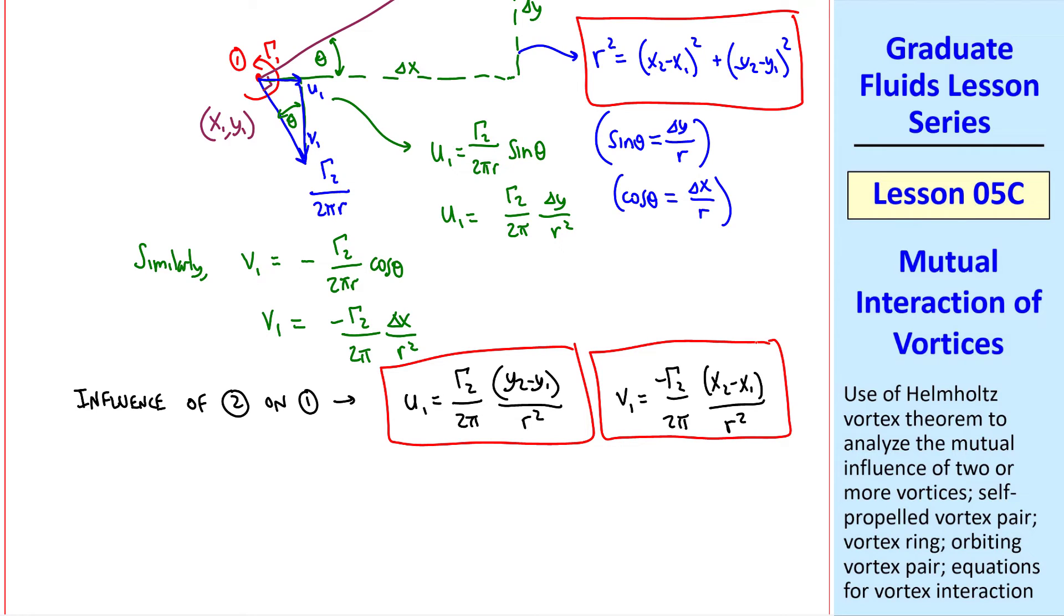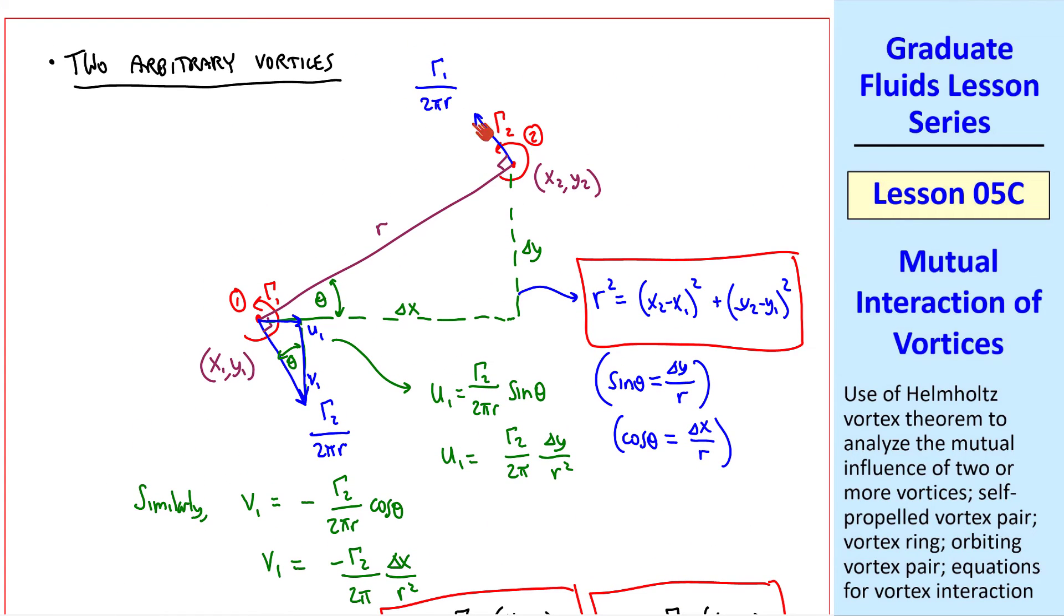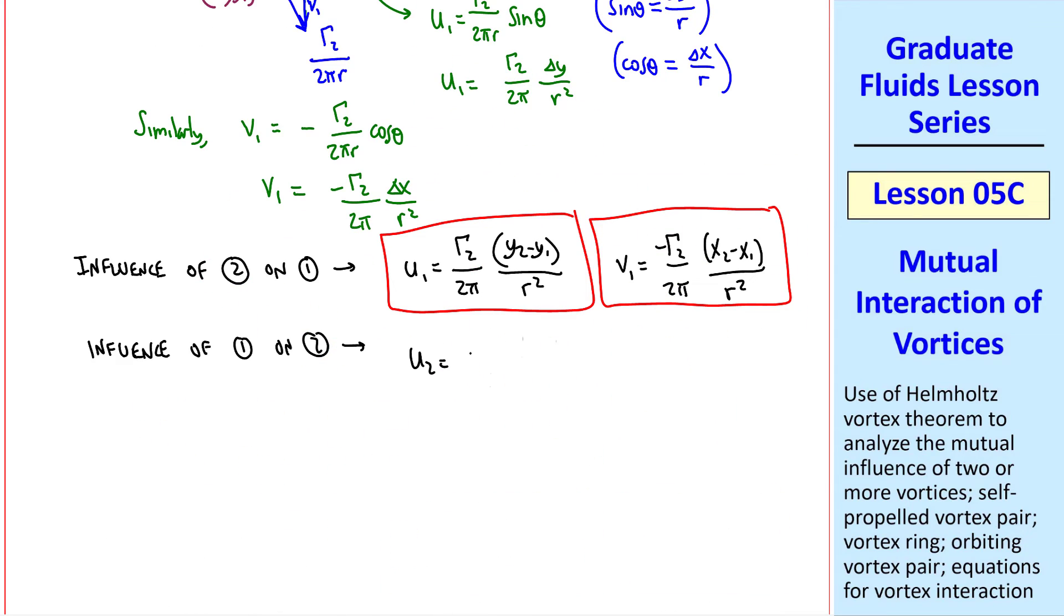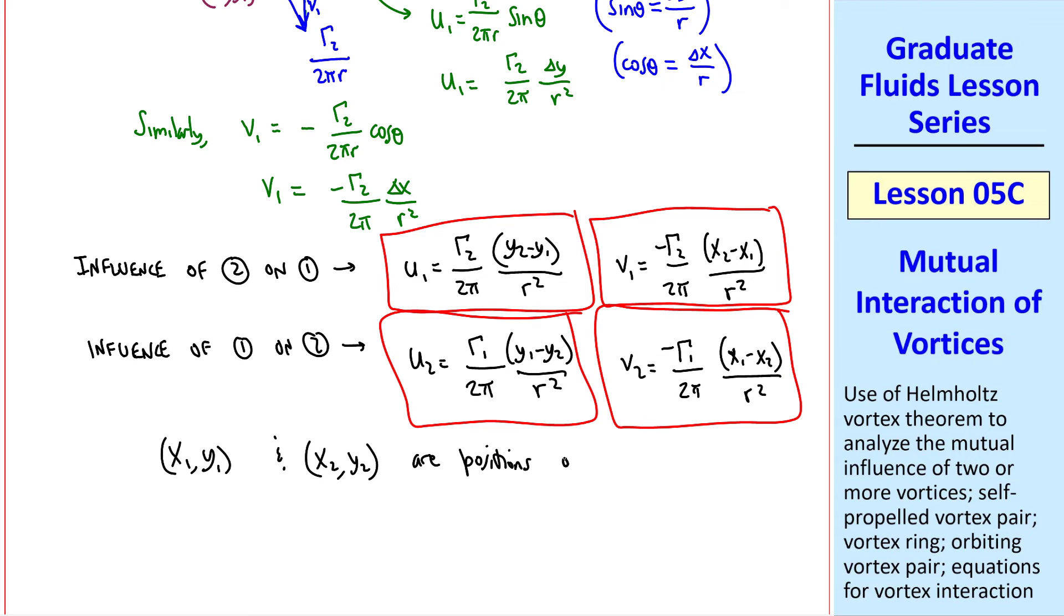And remember that r squared is given by our original coordinates x_1, y_1, and x_2, y_2. Similarly, v_1 is negative gamma_2 over 2 pi x_2 minus x_1 over r squared. Thus we can predict the induced velocity on vortex 1. Similarly, the influence of vortex 1 on vortex 2, if you draw a similar triangle up here and do the trig, you get u_2 equal gamma_1 over 2 pi y_1 minus y_2, notice the change of sign here, over r squared. And v_2 is negative gamma_1 over 2 pi x_1 minus x_2, again noticing the sign change, divided by r squared. I note that x_1, y_1, and x_2, y_2 are the positions of vortex 1 and vortex 2, respectively. This is not tensor notation.